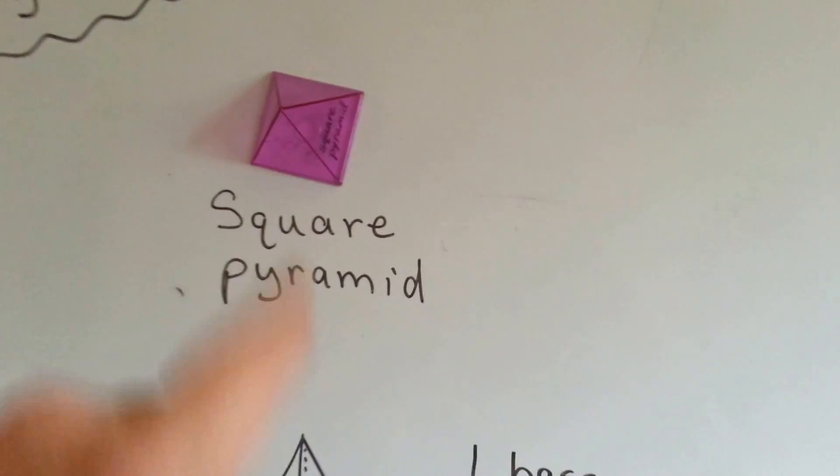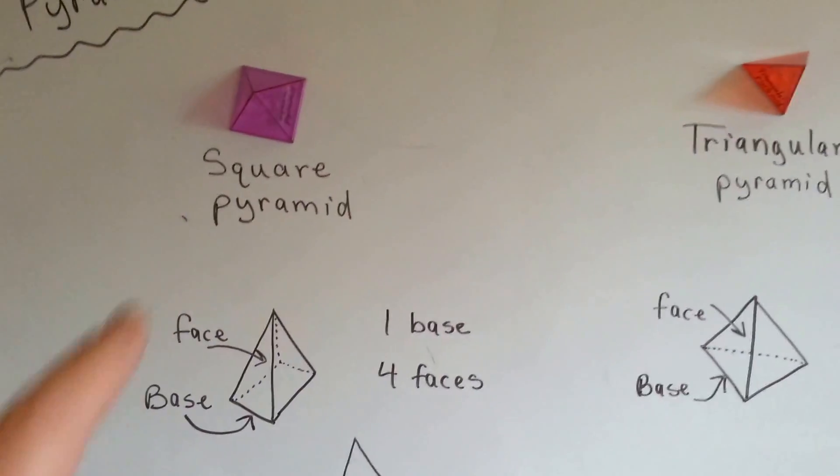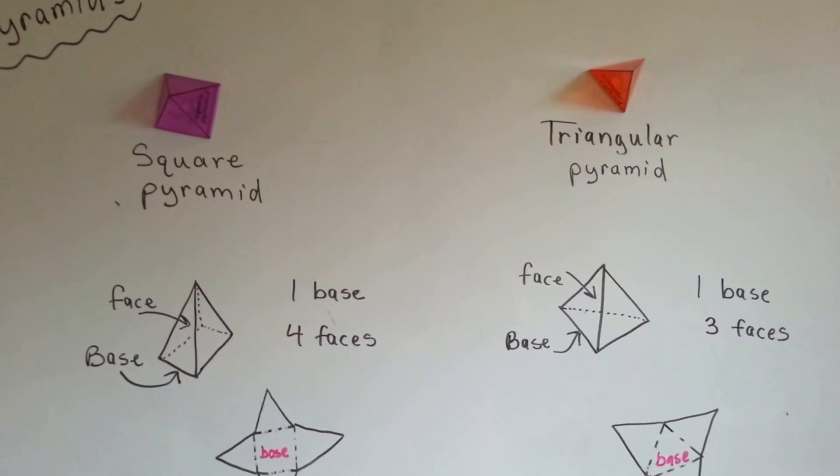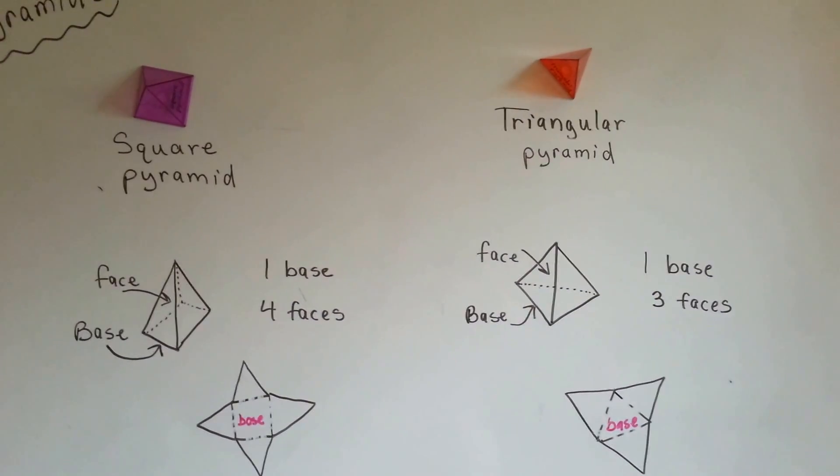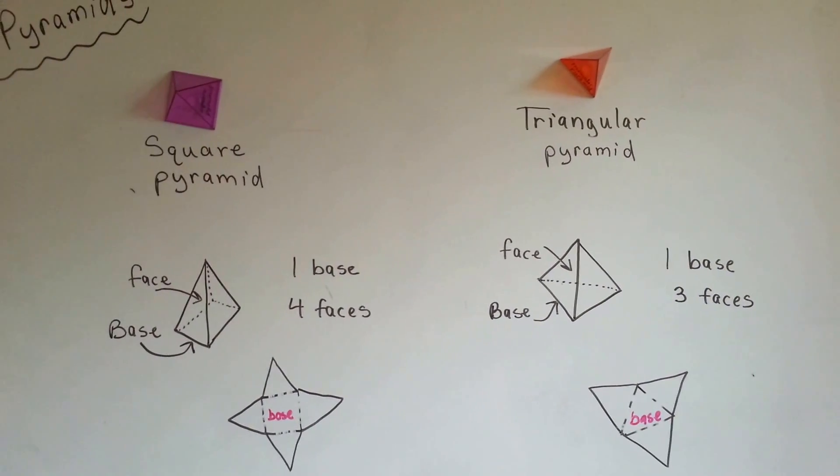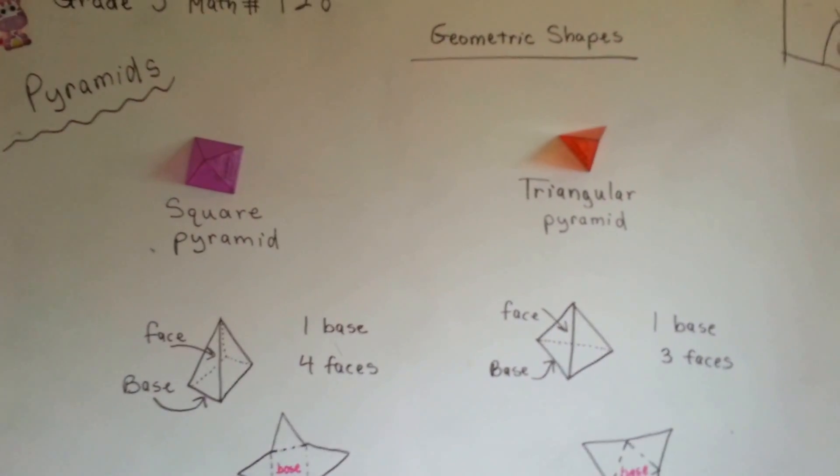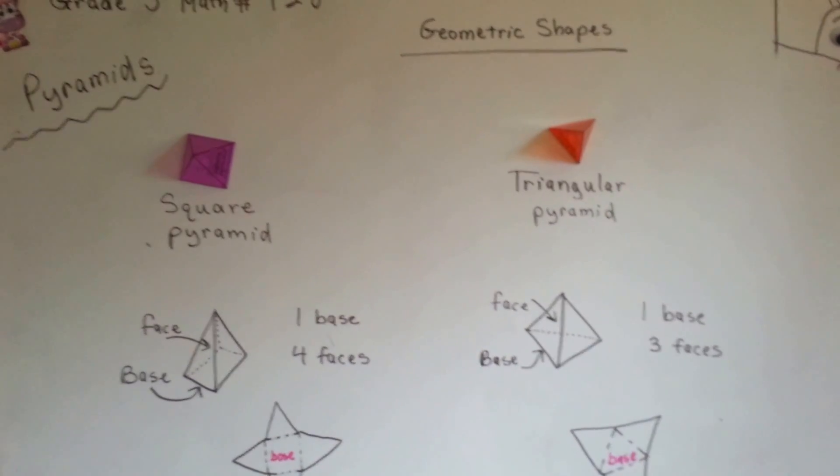This is the kind of pyramids that the pharaohs are in, in Egypt, in the King's Valley. So, those are two different types of pyramid, square pyramid and triangular pyramid. And we're going to talk about spheres and hemispheres next, just like the earth. I'll see you there.